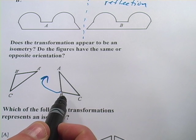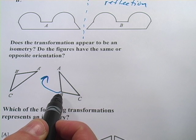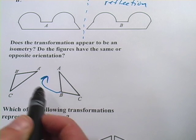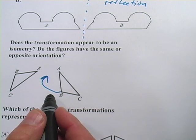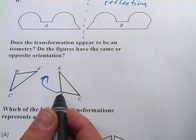So they appear to be congruent. It looks like the transformation is an isometry, because an isometry means it preserves the congruence of the figures. It didn't change size.